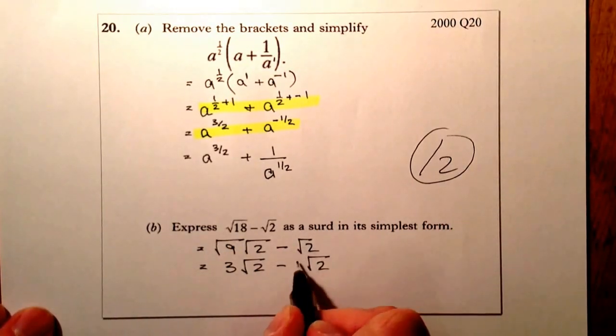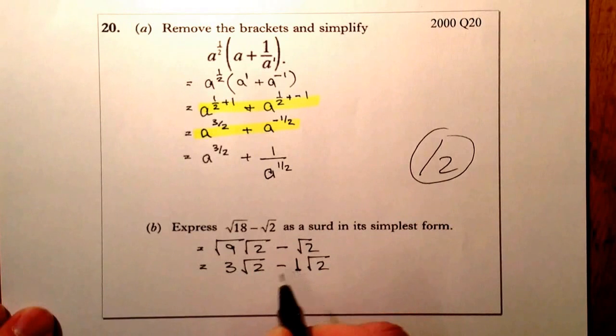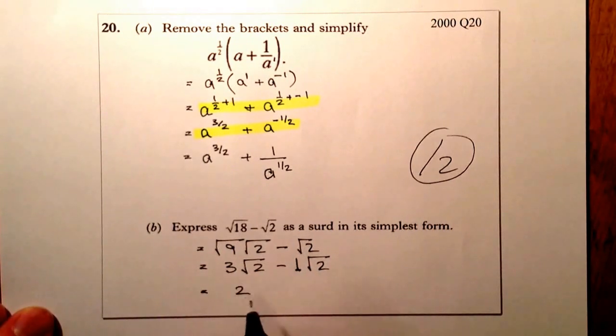So remember this root 2 here is 1 root 2. So I've got 3 of them here. I'm going to take one of them away, so I must be left with 2 of them. And what I'm working with is I'm working with root 2s. So 3 root 2 take away 1 root 2 gives me 2 root 2.